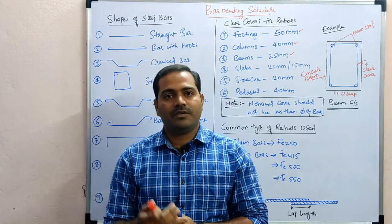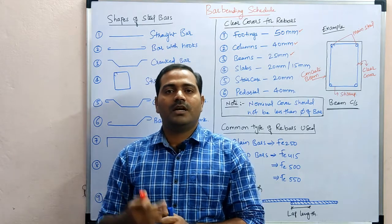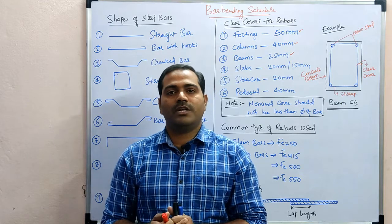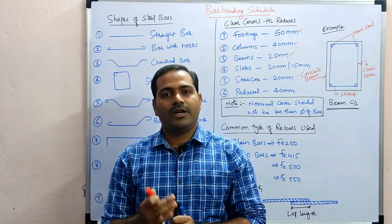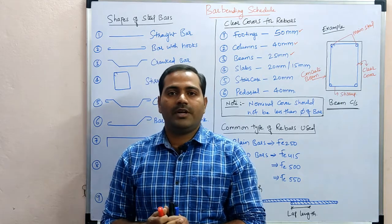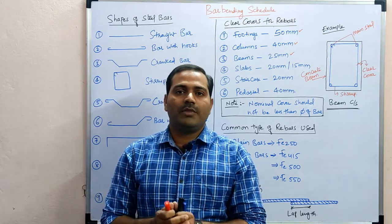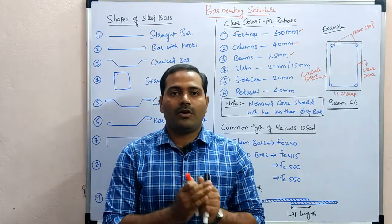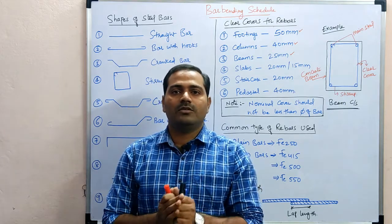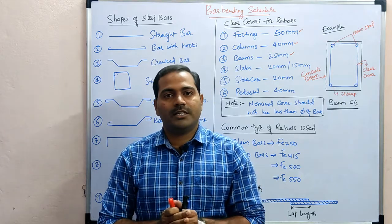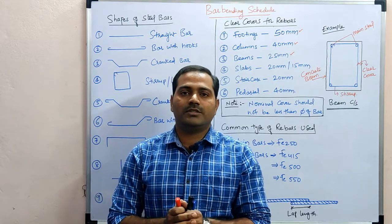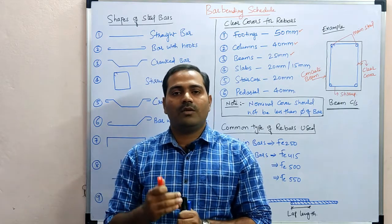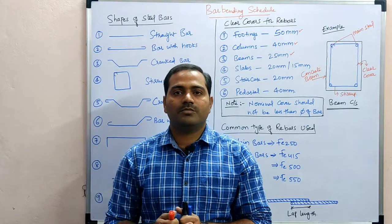In previous videos we covered what is reinforcement, types of reinforcements, grades of reinforcements, diameters of bars, and how to find out the weight of a steel bar per meter length and feet length. We also covered methods of estimation of steel — from drawings and on a percentage basis. If you haven't watched those videos, I will provide the links in the description.